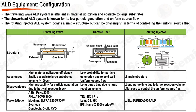The source flux is the rate at which precursor molecules arrive at the substrate surface, and uneven flux can lead to non-uniform film deposition. Each of these systems offers unique advantages and tradeoffs. The choice of system will depend on factors such as the specific application requirements, budget constraints, and the desired balance between throughput, uniformity, and process control. Advancements in ALD technology and equipment design continue to emerge, with researchers and manufacturers seeking to optimize these systems and develop new configurations to better meet the evolving needs of various industries.